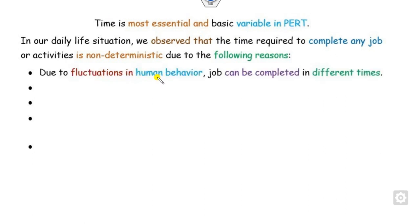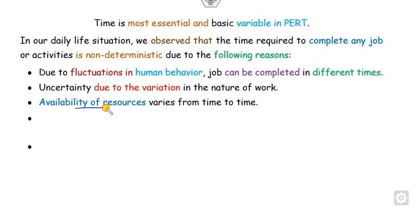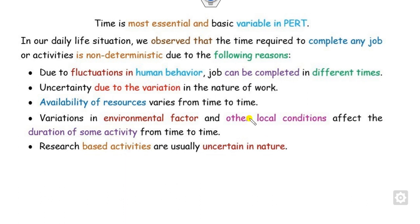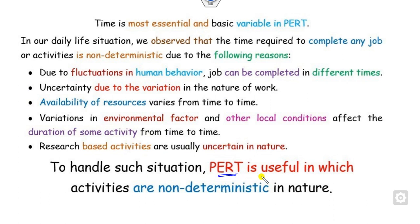For example, human behaviors always fluctuate — they vary from person to person, from time to time. So in order to complete any particular job, different persons may take different amounts of time. Also, there are different resources such as budget and manpower, which also vary from time to time. There are also several environmental and local factors which may affect activities and definitely change from time to time. Additionally, research-based activities are usually uncertain in nature. PERT is a useful technique in which all these non-deterministic natures are handled.